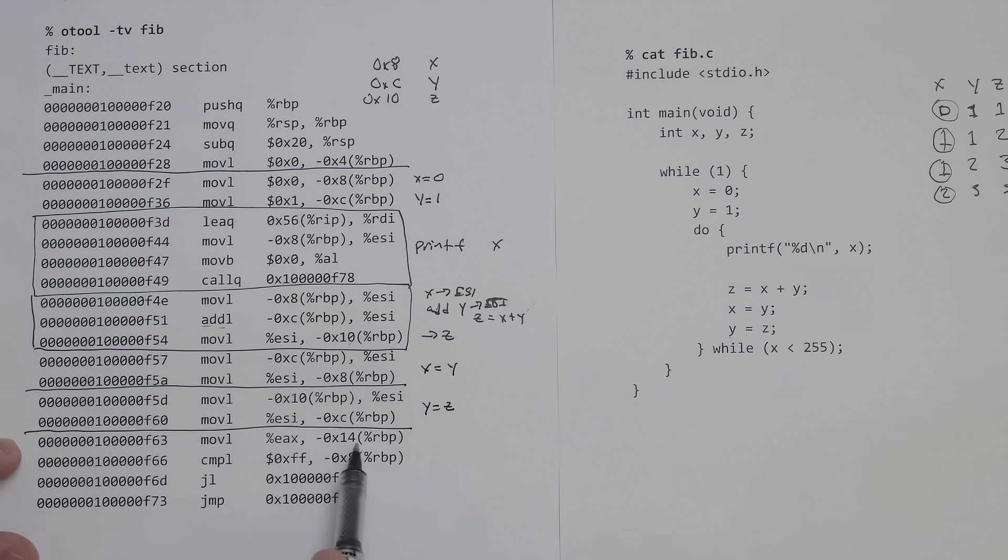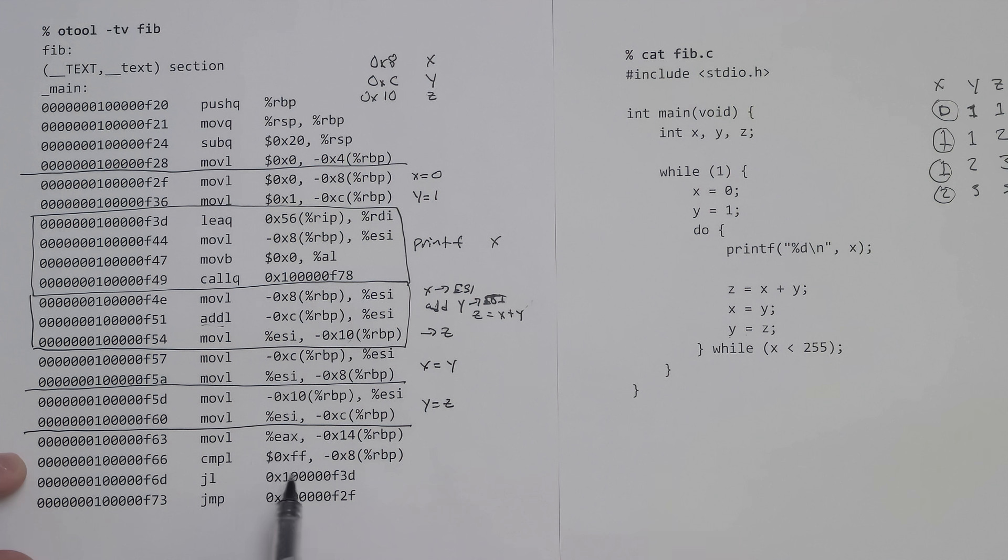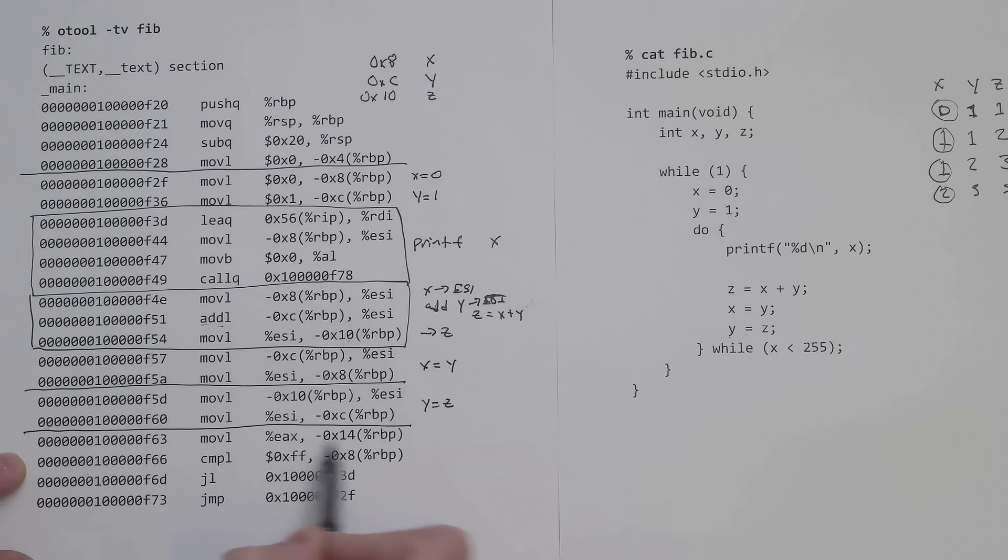This next line, I'm actually not sure what this line does. The EAX register is being moved into another memory location we're not using for anything else. I'm honestly not sure what this line is doing, so if you guys know, point it out in the comments.